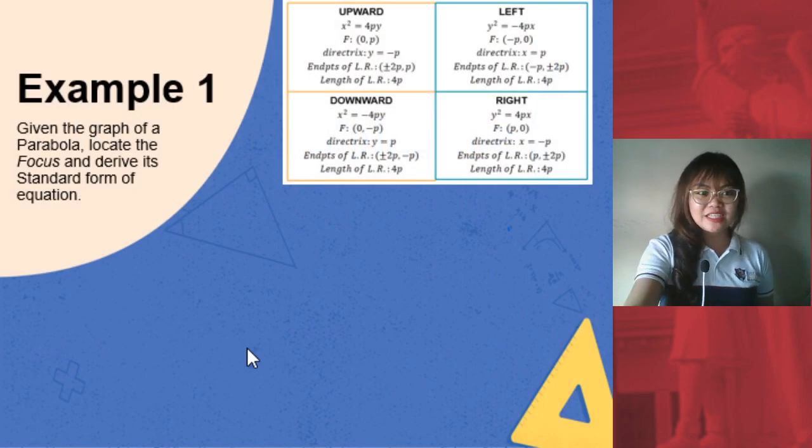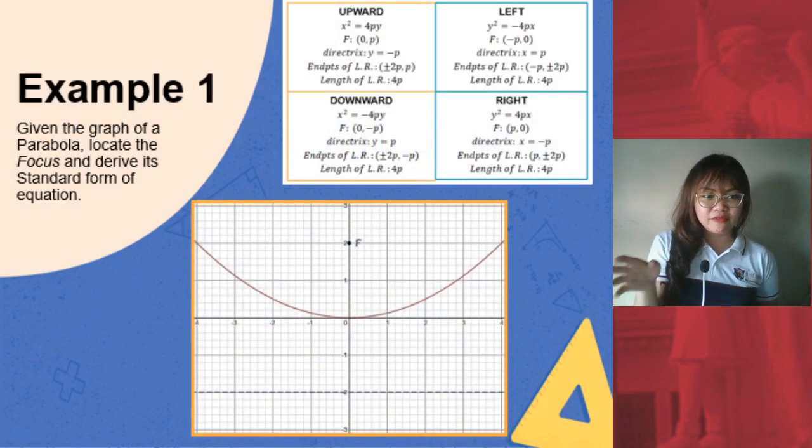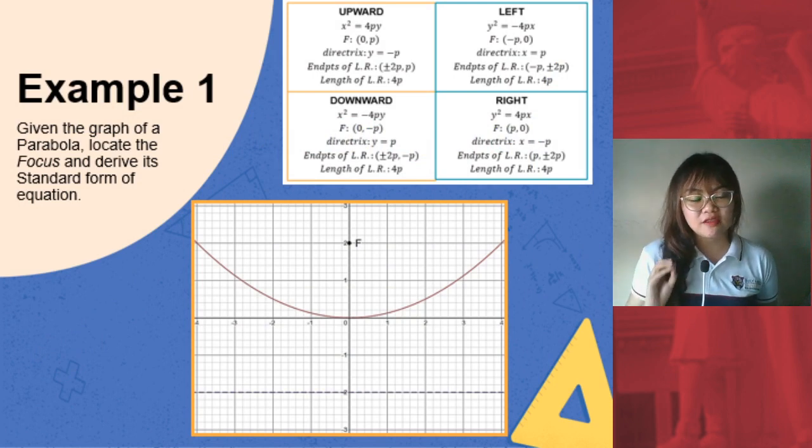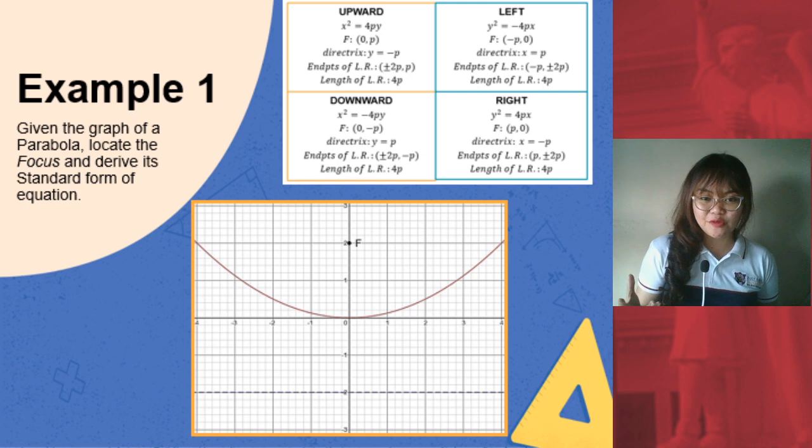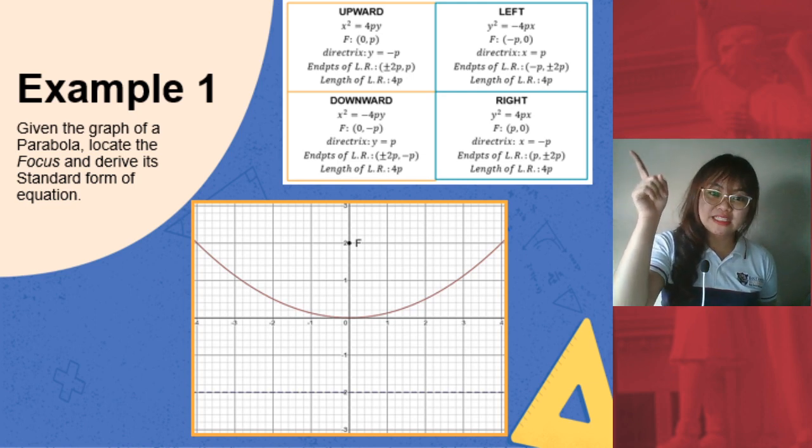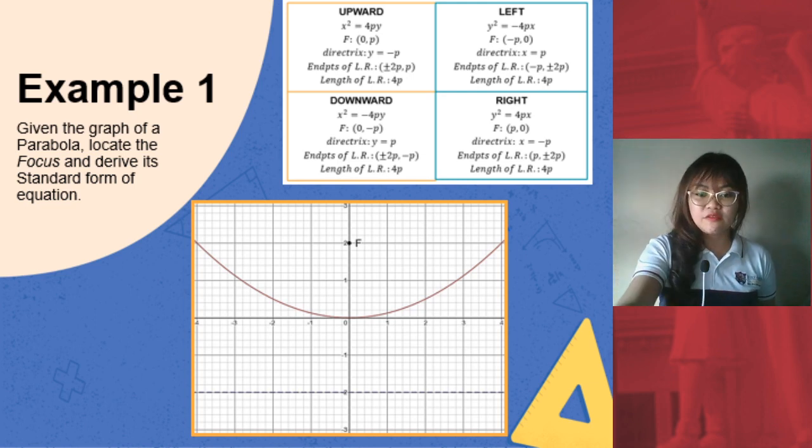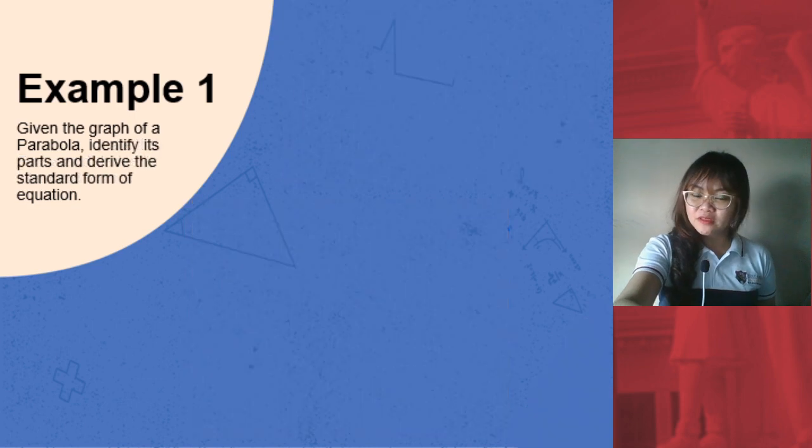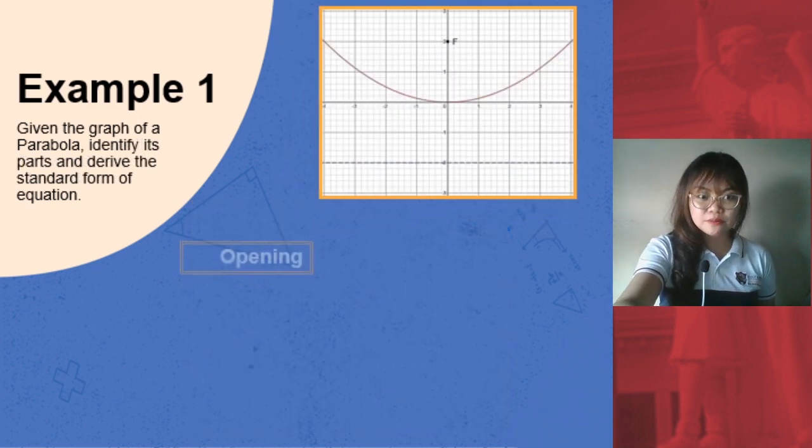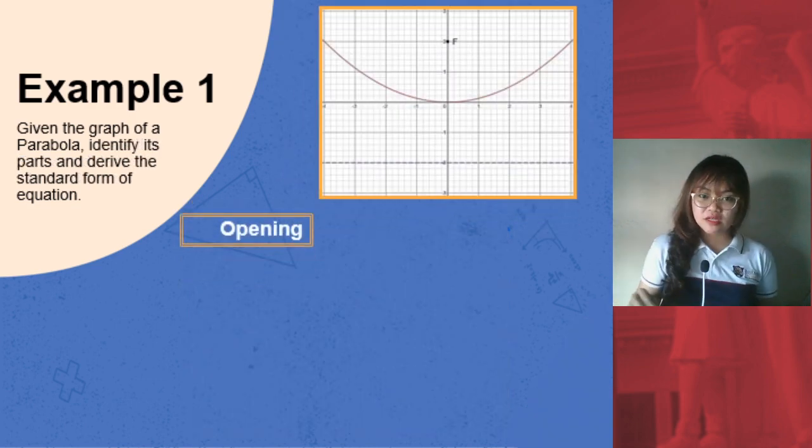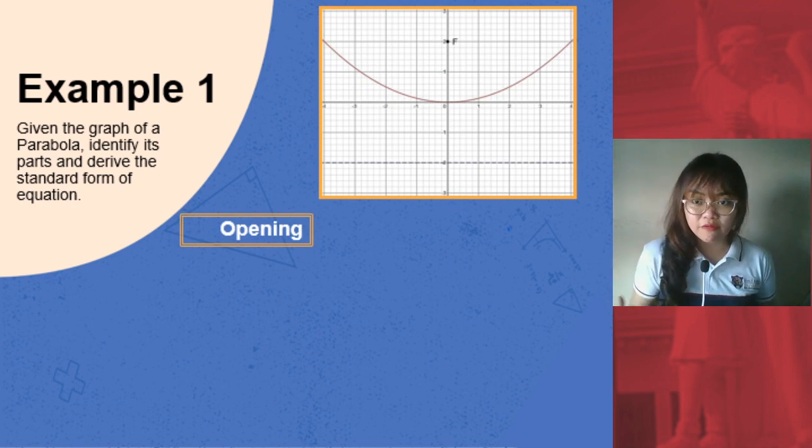Our first example: given this graph, we have to locate the focus, derive its standard form of equation, and identify its other parts. We also have our guide here for the different cases. First, let's identify its opening since that's the most obvious given in our graph. It's opening upwards.